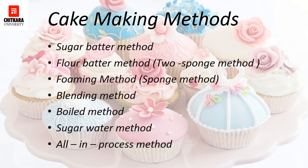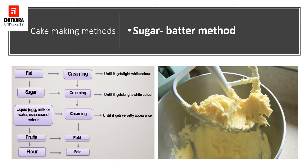These seven methods are the ones we will be discussing. The first is the sugar batter method, also known as the creaming method. Second is the flour batter method, also known as the two-sponge method. Third is the foaming method, also known as the sponge method. Fourth is the blending method. The boiled method is one of the oldest and historical methods. The sugar and water method is also one of the oldest used for cake making. And the all-in-one process is used when you have no time.